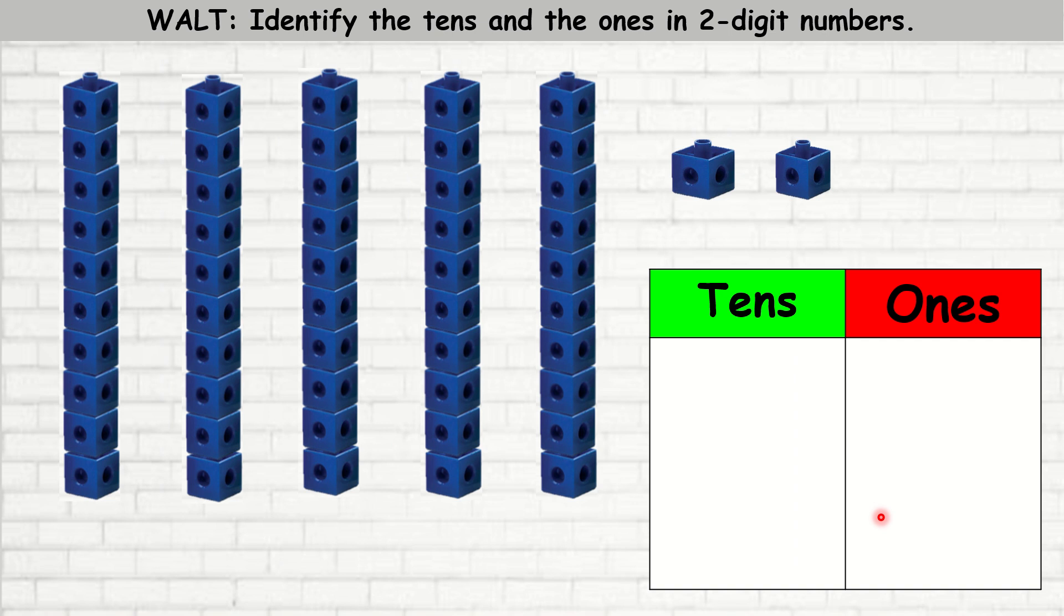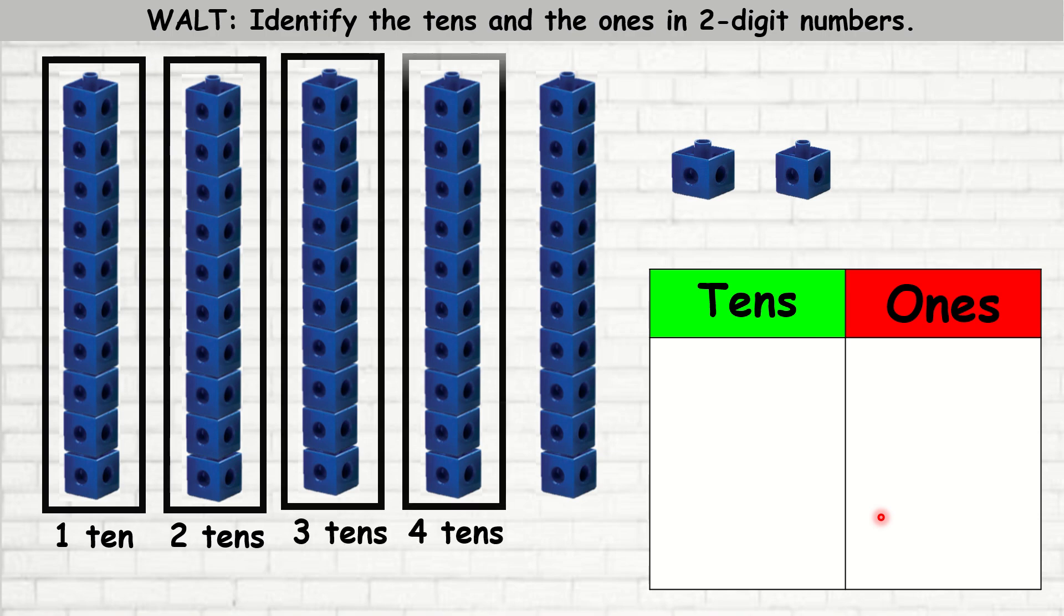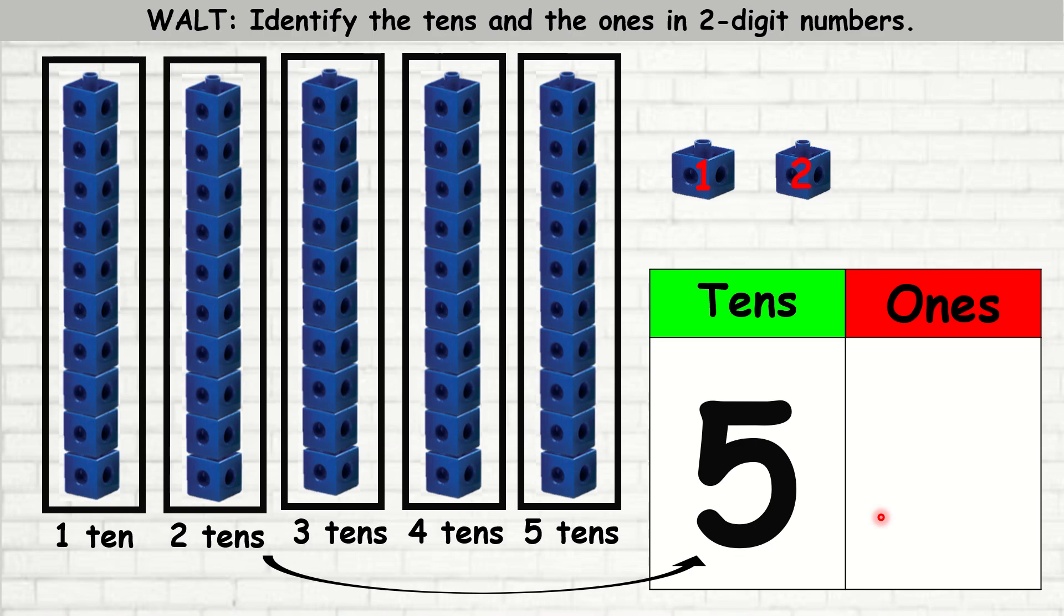Let's try this example. Count the tens for me. One ten, two tens, three tens, four tens, five tens. So we have five tens and two ones. So that number is 52.